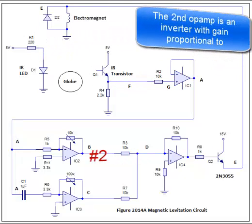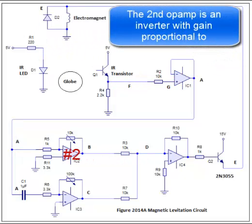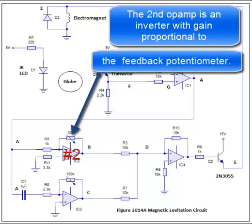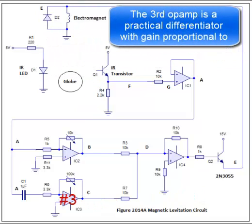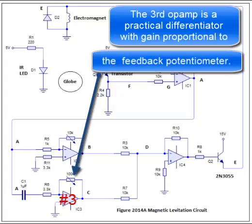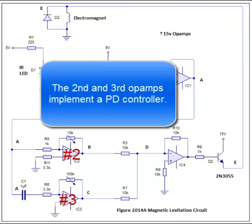The second op-amp is an inverter with gain proportional to its feedback potentiometer. The third op-amp is a practical differentiator with gain proportional to its feedback potentiometer. The second and third op-amps implement a proportional derivative controller.